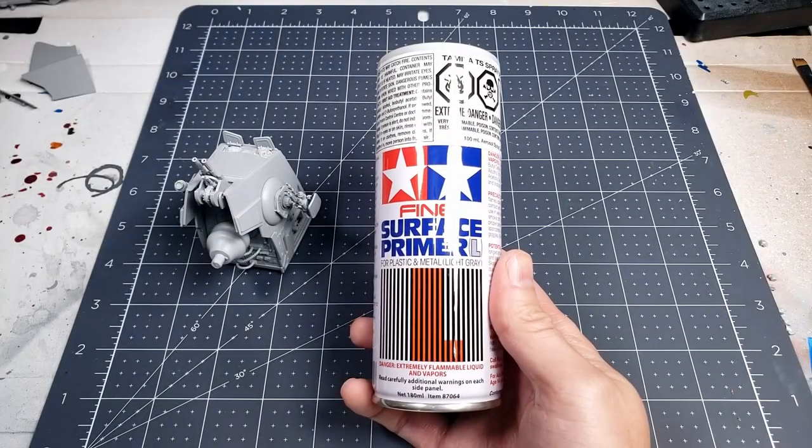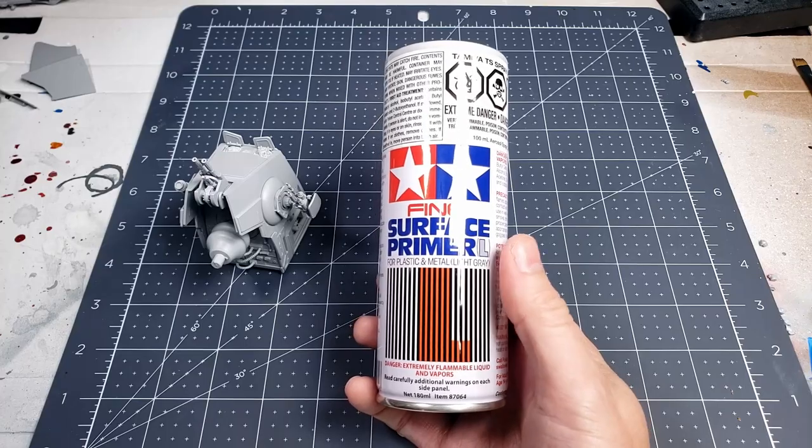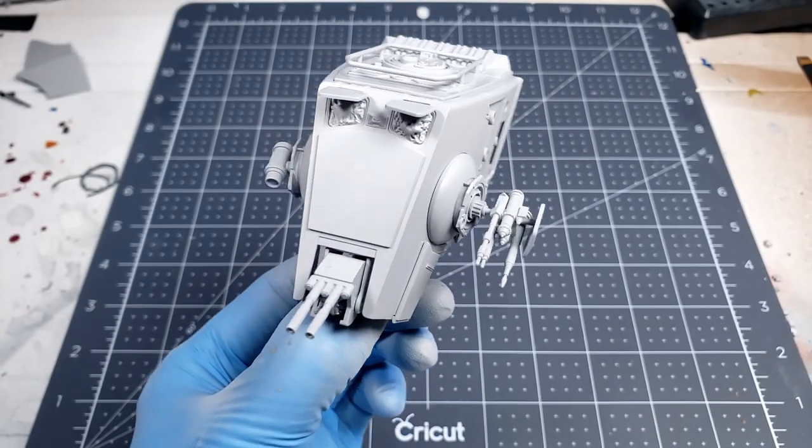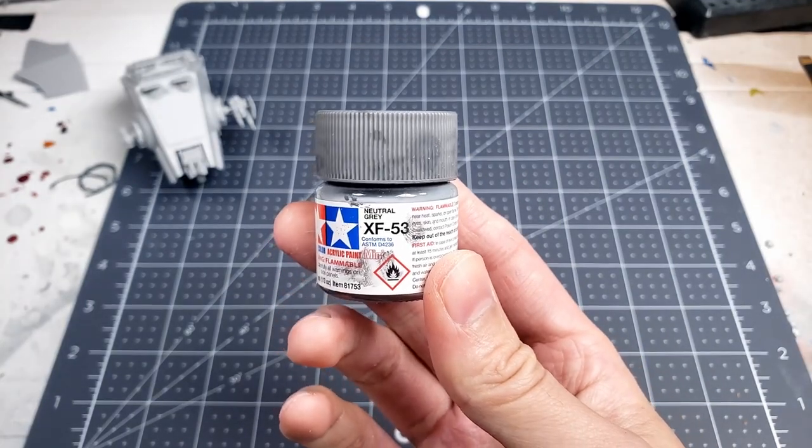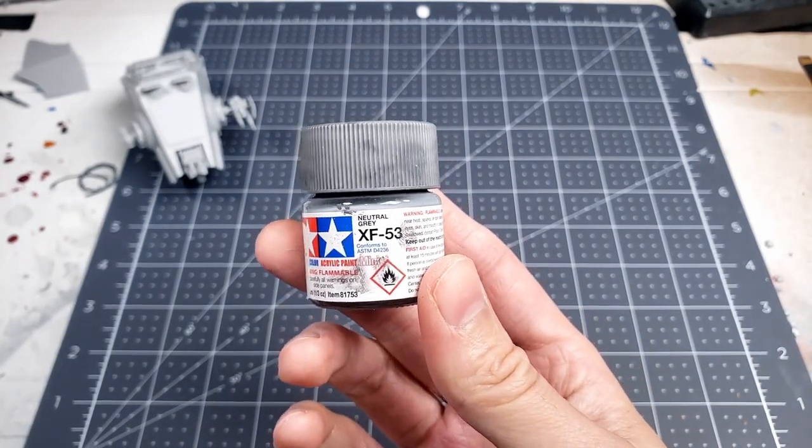I gave the whole model two coats of the same Tamiya surface primer. The gray is actually pretty nice and could be used as a base coat. But I'm going to be using this neutral gray as a base coat instead. It's a little bit darker so that I can create some shading effects with it.